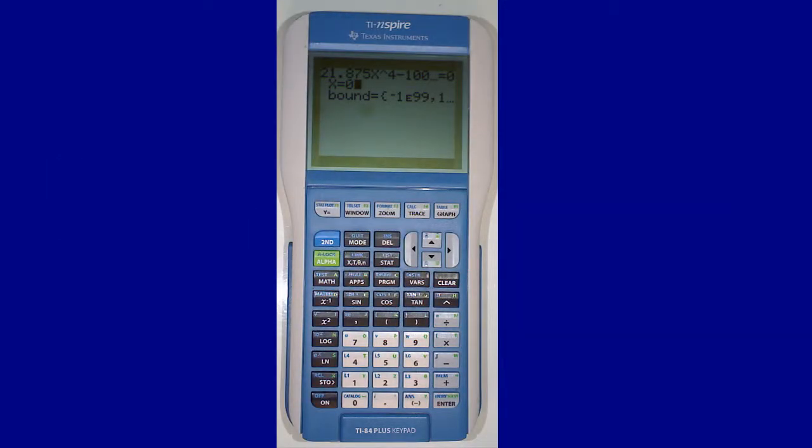The equation will be displayed at the top. The next line will read x equals zero. This is a guess you can enter to help the calculator figure out the answer. For this example, we will use x equals zero as our guess.